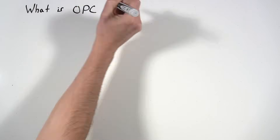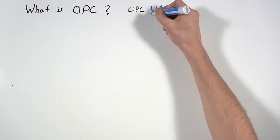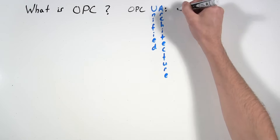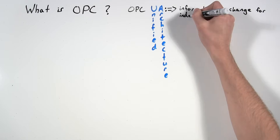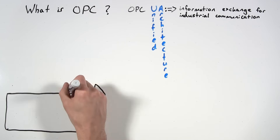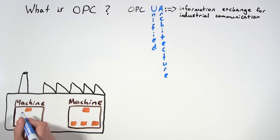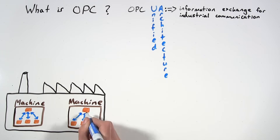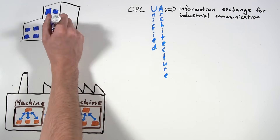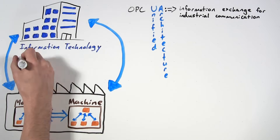What is OPC UA? OPC UA is an open standard that specifies information exchange for industrial communication, particularly on devices within machines, between machines, and from machines to systems in a convergence of IT and OT.